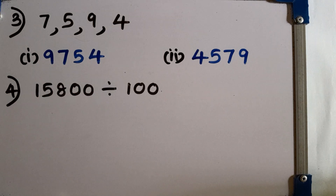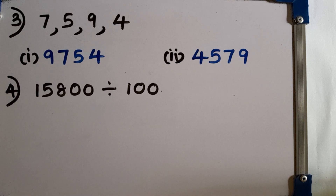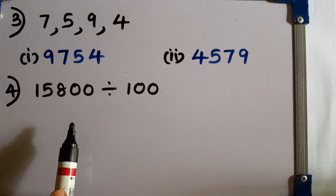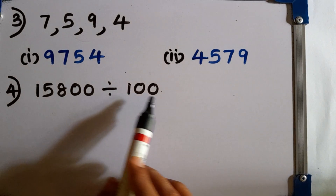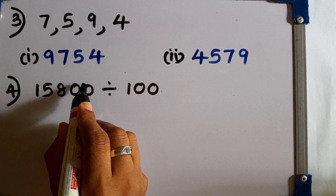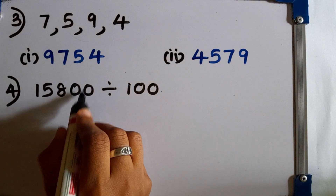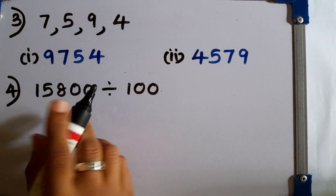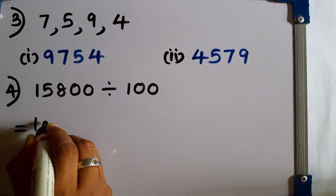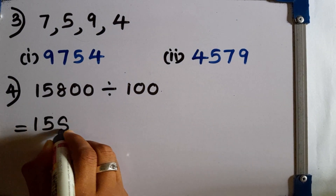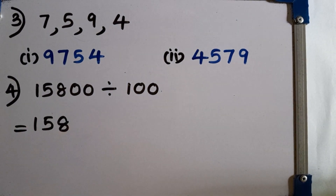Fourth question: we are given this number, divide by 100. When a number with zeros at the end is divided by 100, we can cut off the two zeros at the end. Then write the answer as 158. That is the answer.